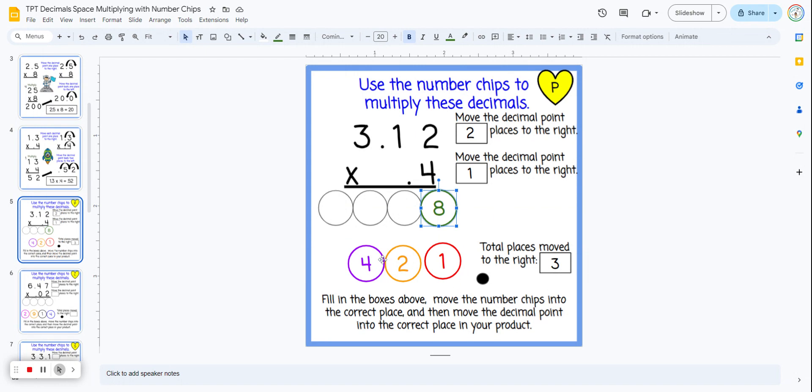Four times one, going from right to left, and then four times three would be 12.